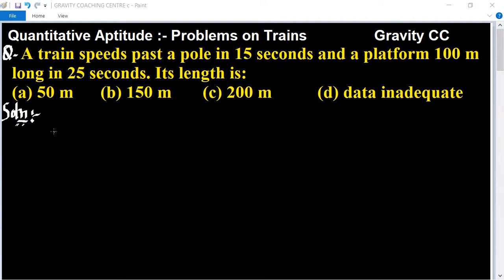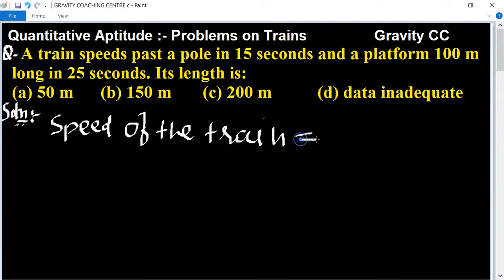First, we have to find the speed of the train. Speed of the train equals length of the train plus length of the platform upon time.